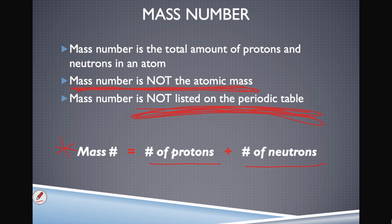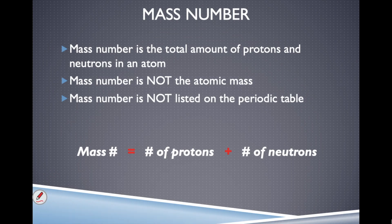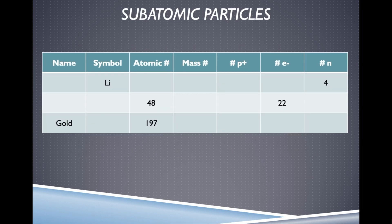Let's use our knowledge about subatomic particles and how atomic number and mass number give us information to figure out the unknown pieces in a chart. Each row represents a different element, and we're given some information but not all of it for three elements.